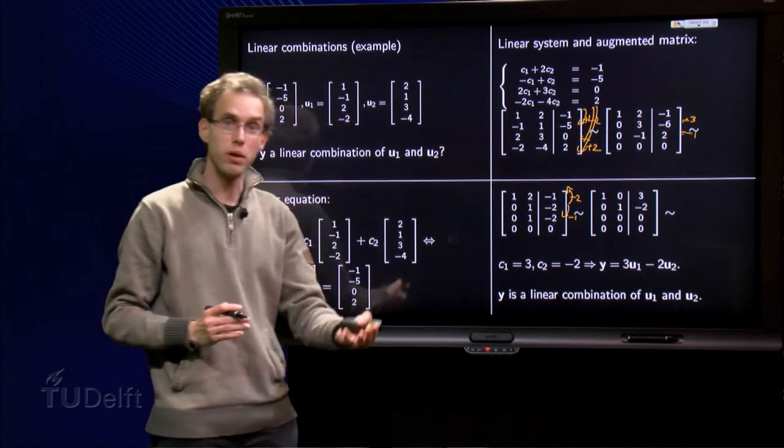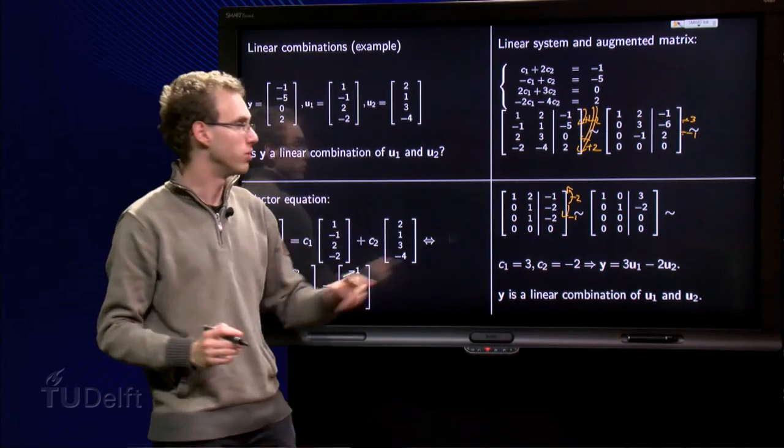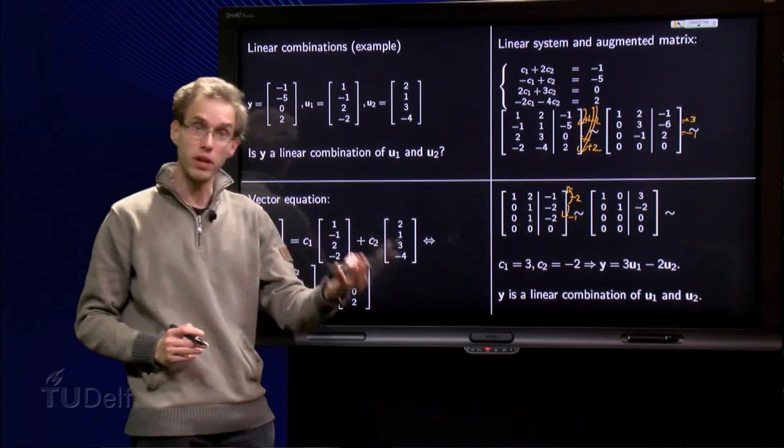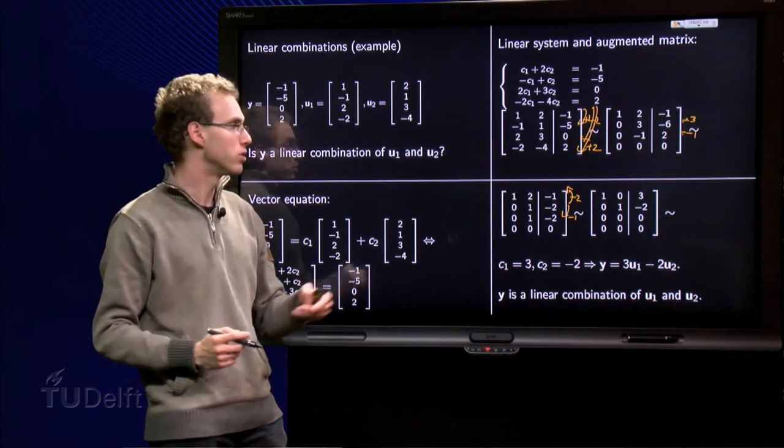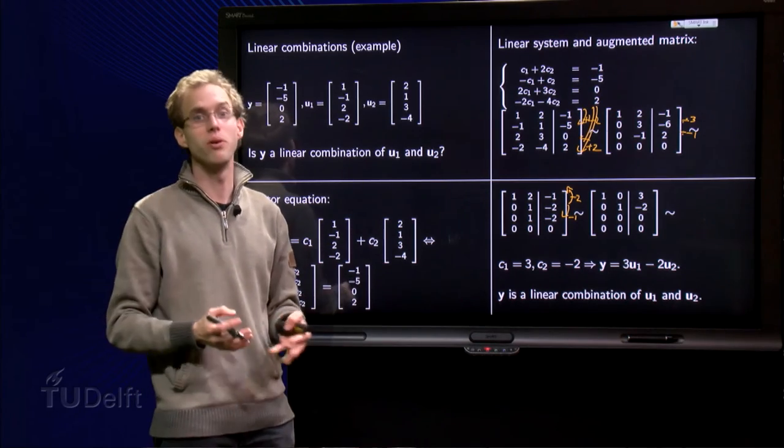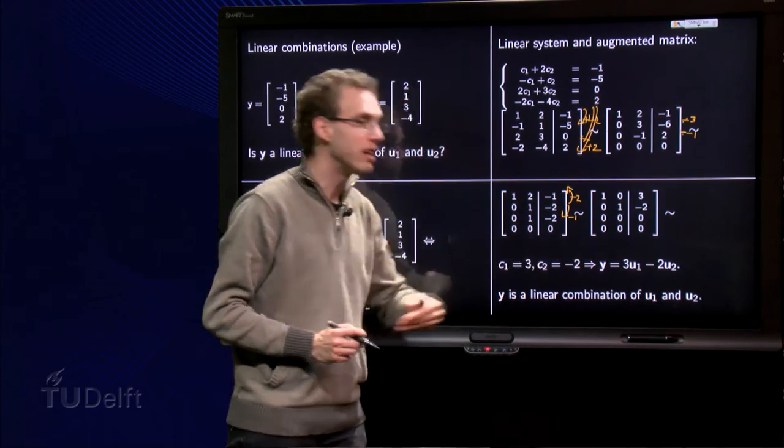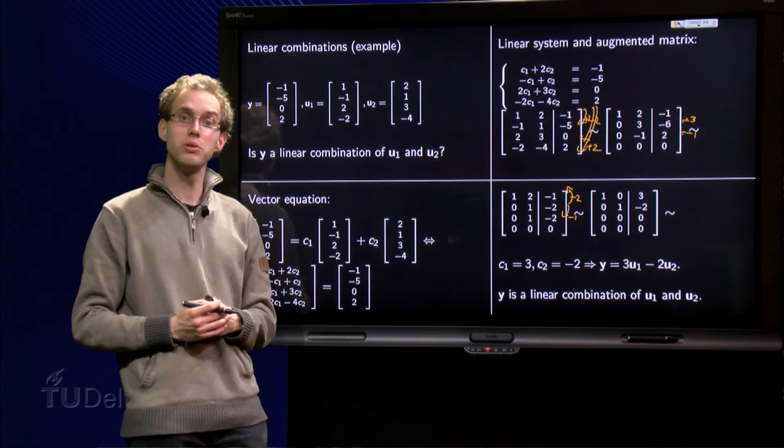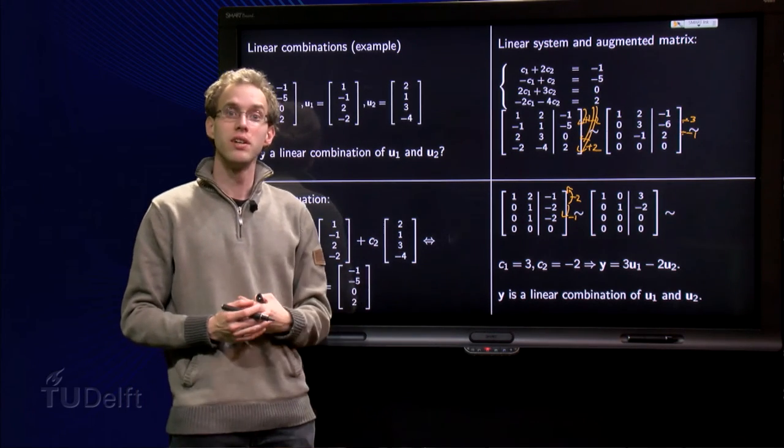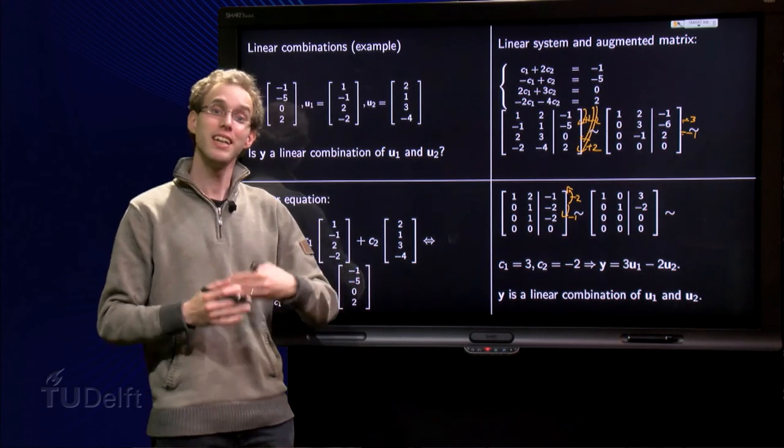We find 1 times c1 plus 0 times c2 equals 3, 0 times c1 plus 1 times c2 equals minus 2, so c1 equals 3, c2 equals minus 2, and the other two rows just tell us that 0 equals 0, which is true. So we find finally that y equals 3 times u1 minus 2 times u2, and that means that y can be written in terms of u1 and u2, so y is a linear combination of u1 and u2.